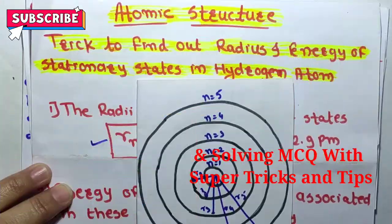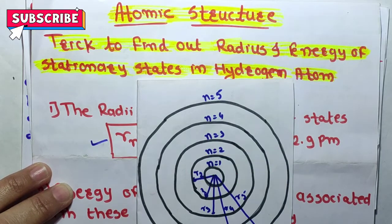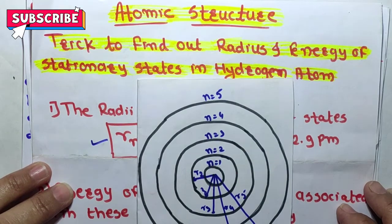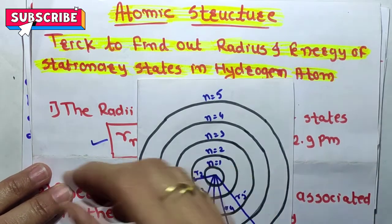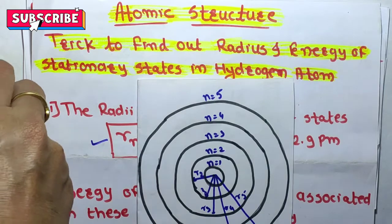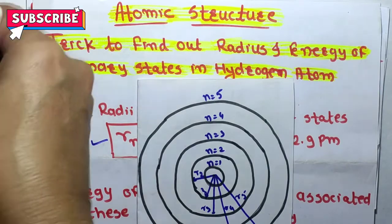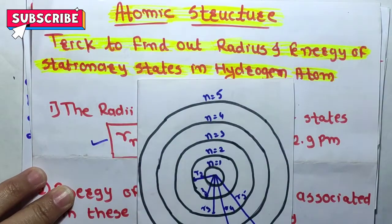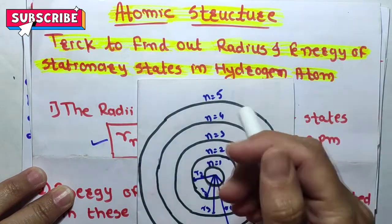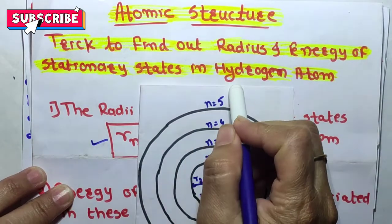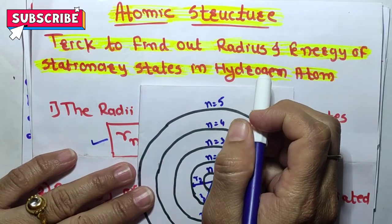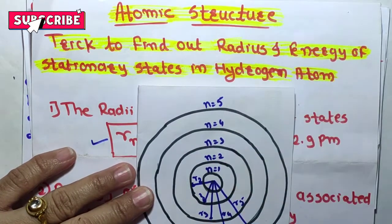Hello students, welcome to my channel. In this channel I will teach chemistry and maths in the simplest way. Today's topic is a trick to find out the radius and energy of stationary states in hydrogen atom by using Bohr's atomic model.